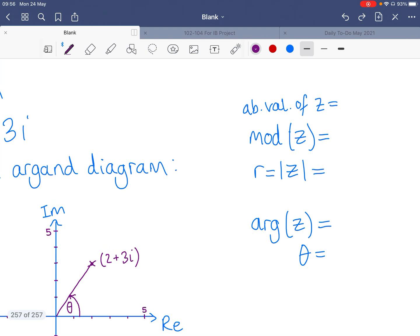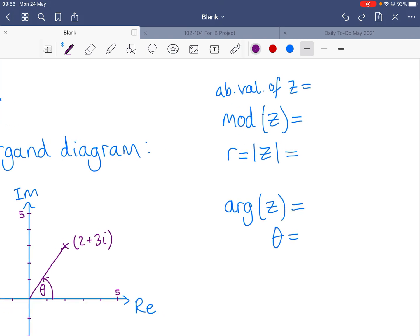So, the length of the line, firstly, we might call that the absolute value of z. We might call that the modulus or mod z. It's got lots of names.